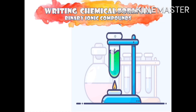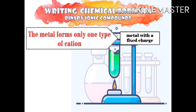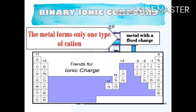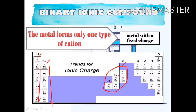In this video, we will only be writing chemical formulas for binary ionic compounds with metals that form only one type of cation — these are the metals with a fixed charge. The metals that form only one type of cation are found in group 1 and group 2 of the periodic table, and also certain other metals. Group 1 metals, from lithium down to francium, all have a 1+ charge. Group 2 metals, from beryllium down to radium, all have a 2+ charge. The other metals shown have charges of 3+, 2+, and 1+.